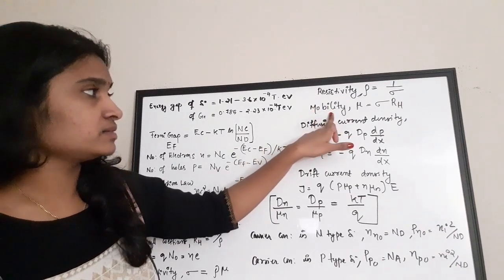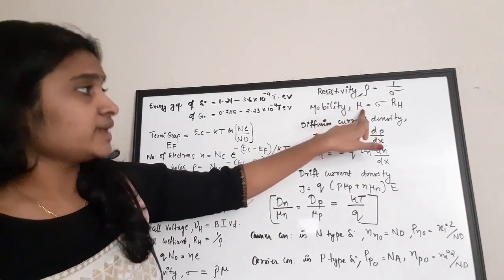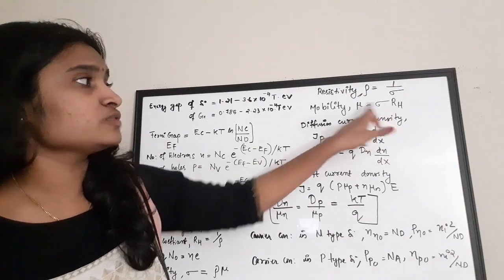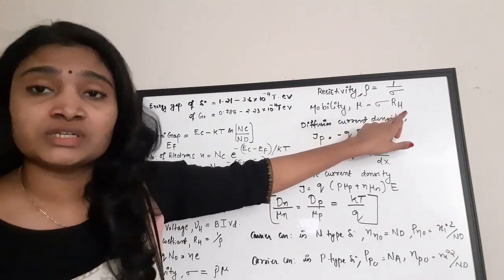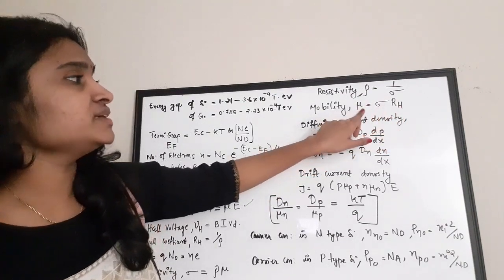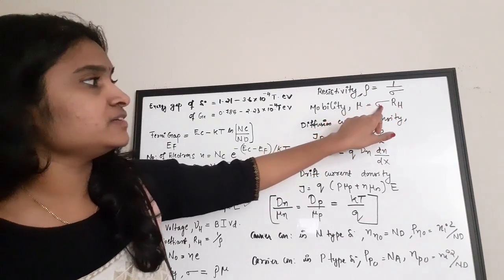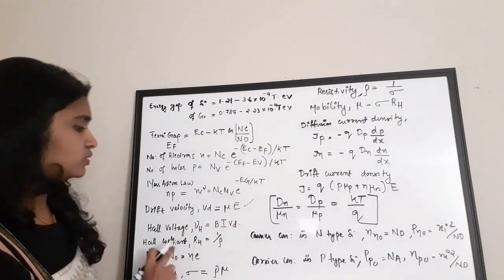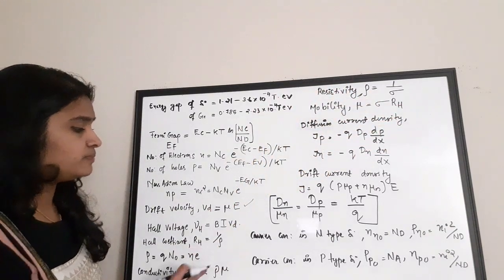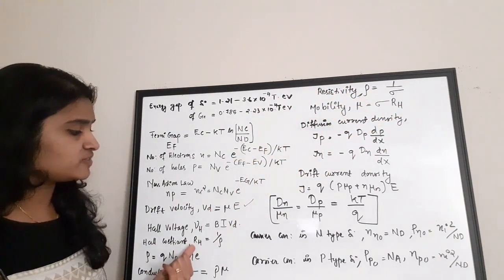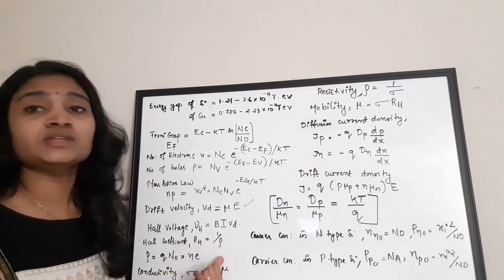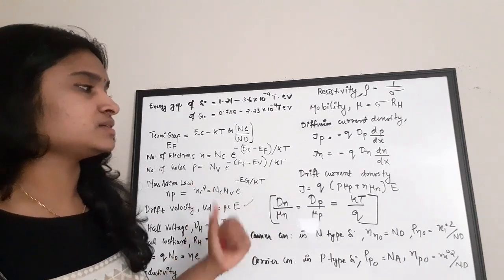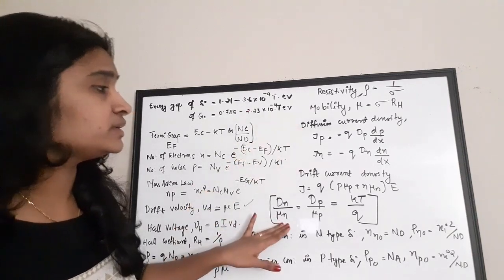Mobility of carriers can be expressed in terms of the Hall coefficient: μ = σ × RH, where σ is conductivity and RH is the Hall coefficient. We have already defined the Hall coefficient as RH = 1 / charge density.